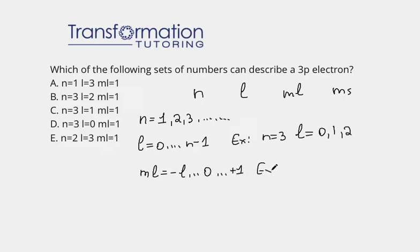So for example, if my L is equal to 2, all of the possible numbers for ML will be from minus 2 through 0 through plus 2. So minus 2, minus 1, 0, plus 1, and plus 2.